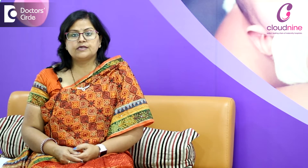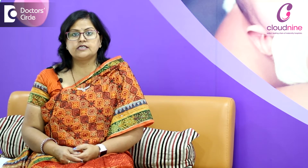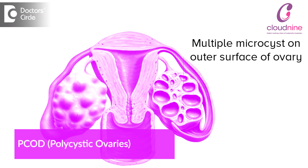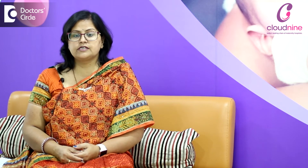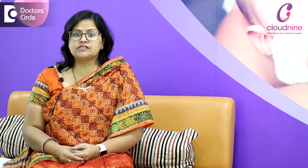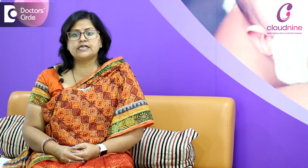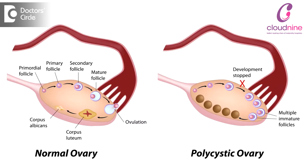PCOD is a very common metabolic and endocrine abnormality. It is found in women of all age groups. It leads to multiple microcyst formation on the outer surface of the ovary. This is a metabolic abnormality which results from the disturbed level of oestrogen and progesterone, the female sex hormones, as well as the high level of androgen, which is a male sex hormone, in the female body. The size of the cysts varies between 2 to 8 mm in diameter, giving the appearance of water bubbles on the outer surface of the ovary.